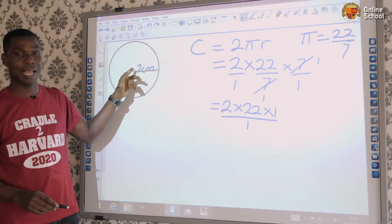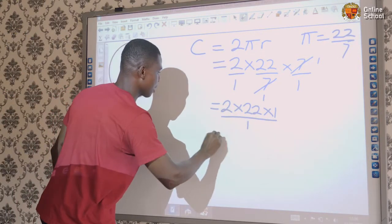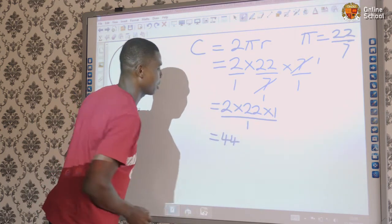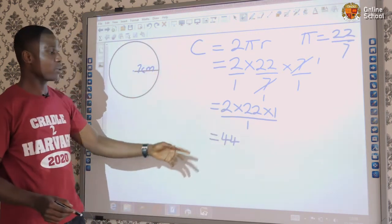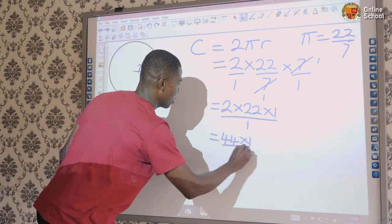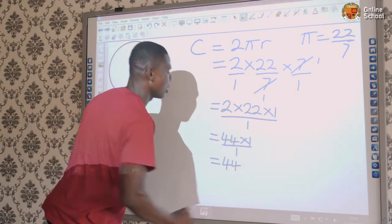We are left with 2 times 22 times 1 over 1. I'm taking it gently like this so that you won't have a problem. In some cases, the radius may be given as a fraction. This is simply 44. 44 times 1 over 1 is 44. Let's take it gradually. This is 44.